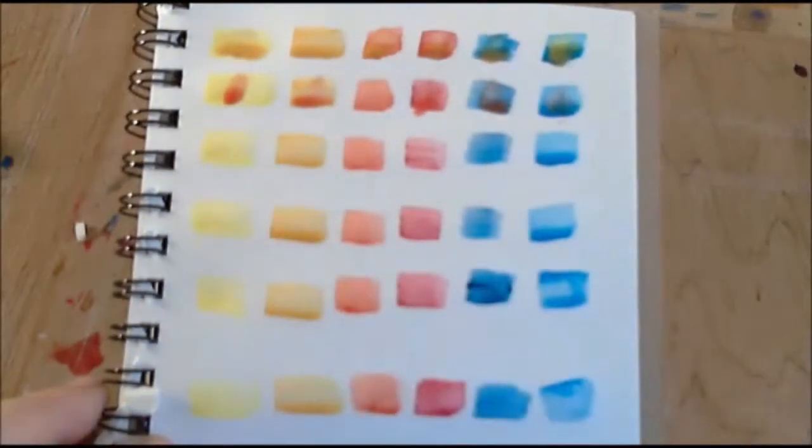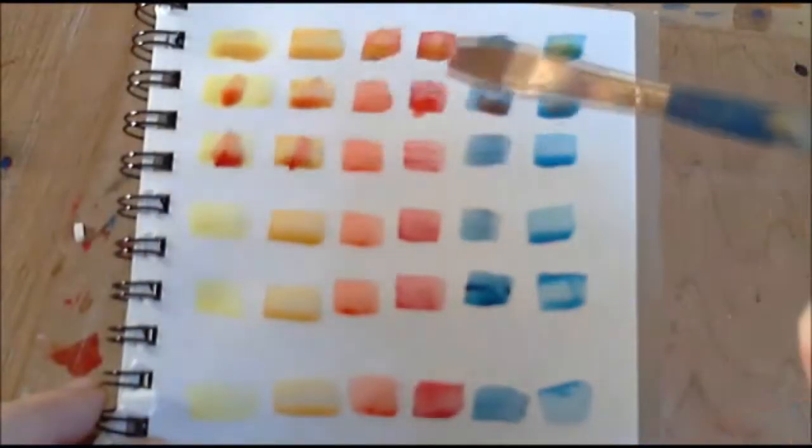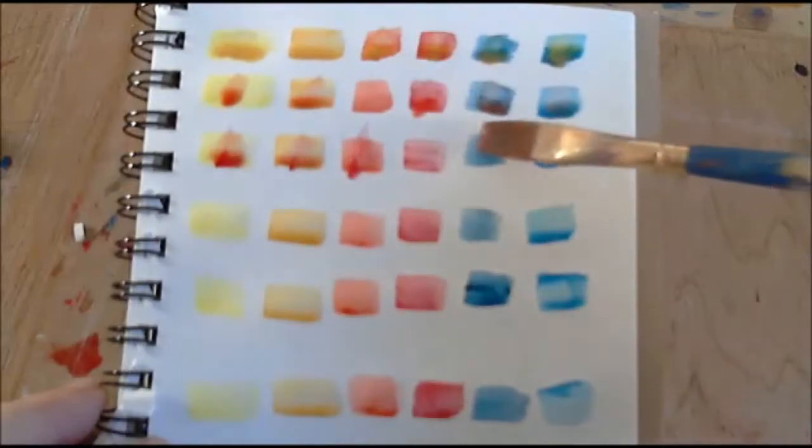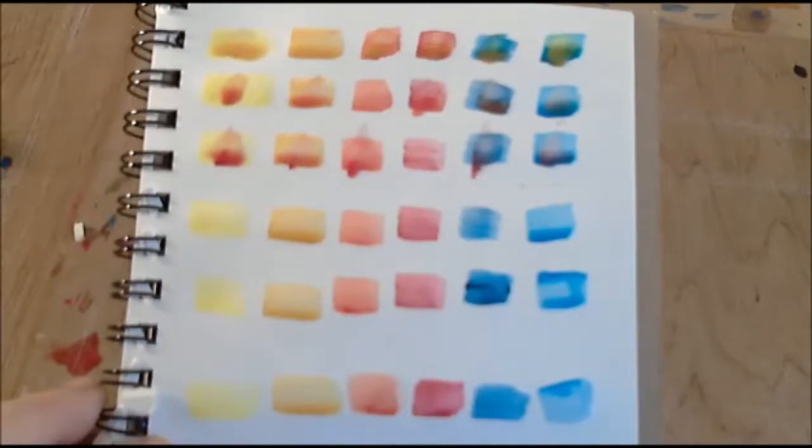When trying to create your colours, you may find that one colour overpowers another. To weaken the colour, add more water directly onto it. This will dilute the colour, enabling you to create the colour you require.